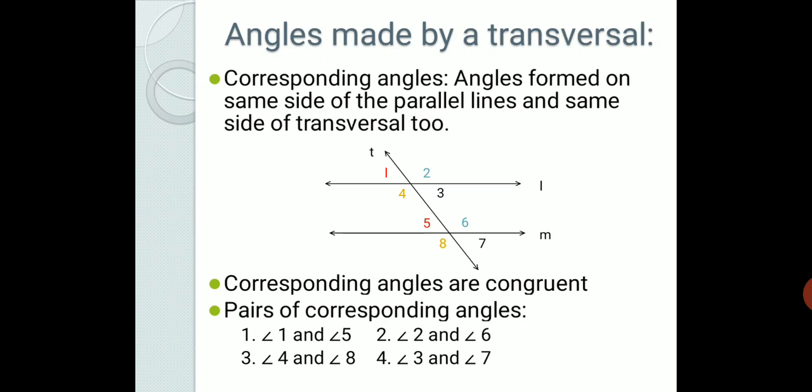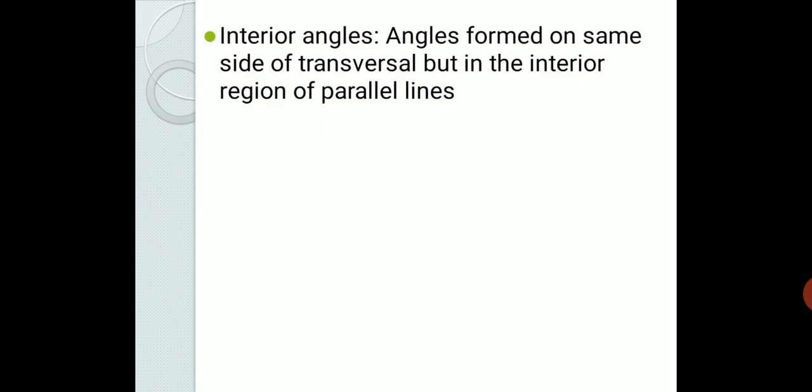Let us move to the next type: interior angles. These are angles formed on the same side of the transversal but in the interior region of the parallel lines — that is, inside the two parallel lines. With line L parallel to line M and line T as transversal, angle 4 and angle 5 are the two angles in the interior region, and they are on the same side — the left-hand side — of the transversal, so they form an interior angles pair. Similarly, angle 3 and angle 6 are the other pair, both between the two parallel lines and on the right-hand side of the transversal.